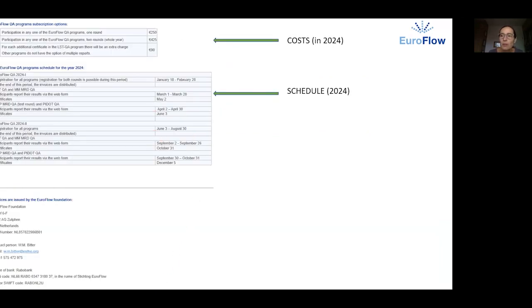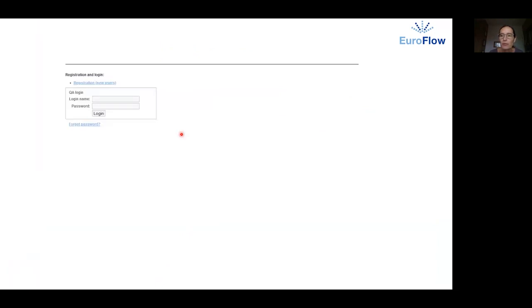When you scroll down the introductory page you can see the costs and the schedule for the particular year and if you get interested you can register. The registration doesn't oblige you to anything, no payment is involved, you will just get the access to more specific information. By clicking this link you will get to the new user's registration form.